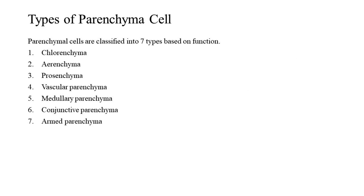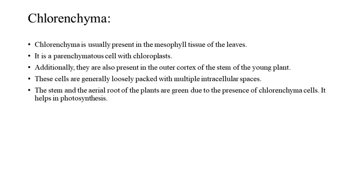Parenchymal cells are classified into seven types based on function. Chlorenchyma is usually present in the mesophyll tissue of the leaves. It is a parenchyma cell with chloroplasts. They are also present in the outer cortex of the stem of young plants. These cells are generally loosely packed with multiple intercellular spaces. The stem and aerial roots of plants are green due to the presence of chlorenchyma cells, and it helps in photosynthesis.